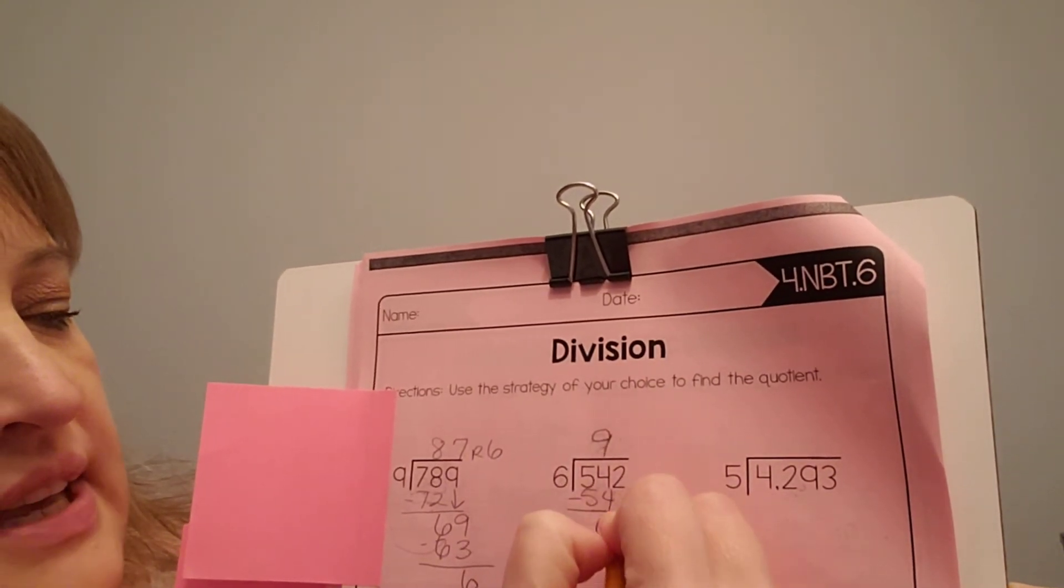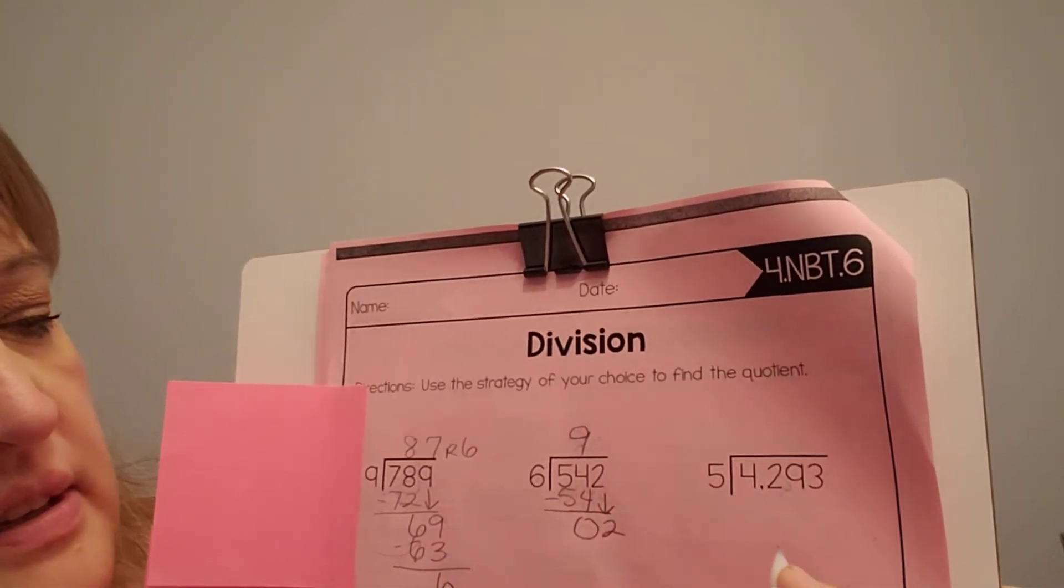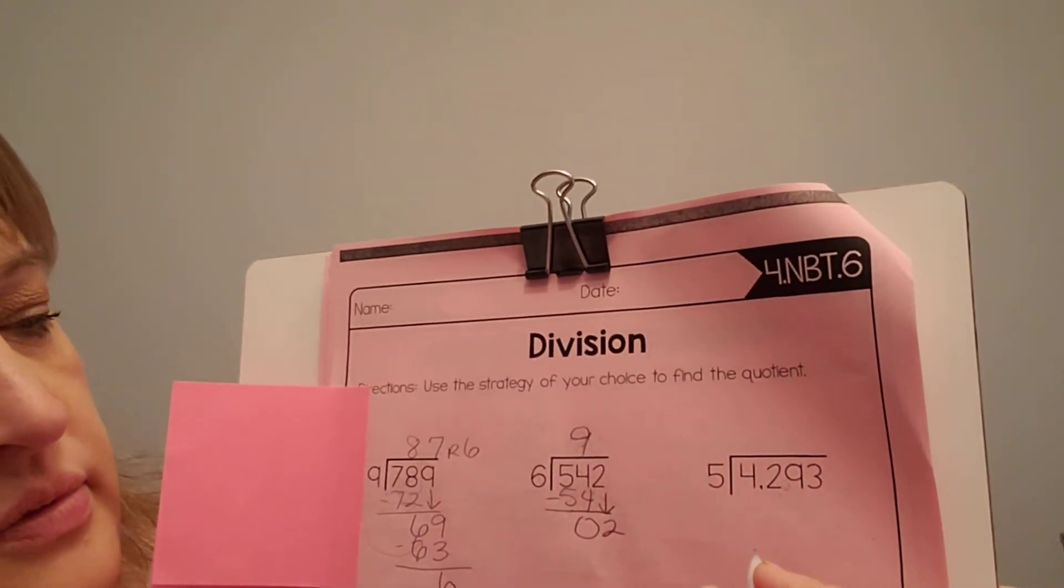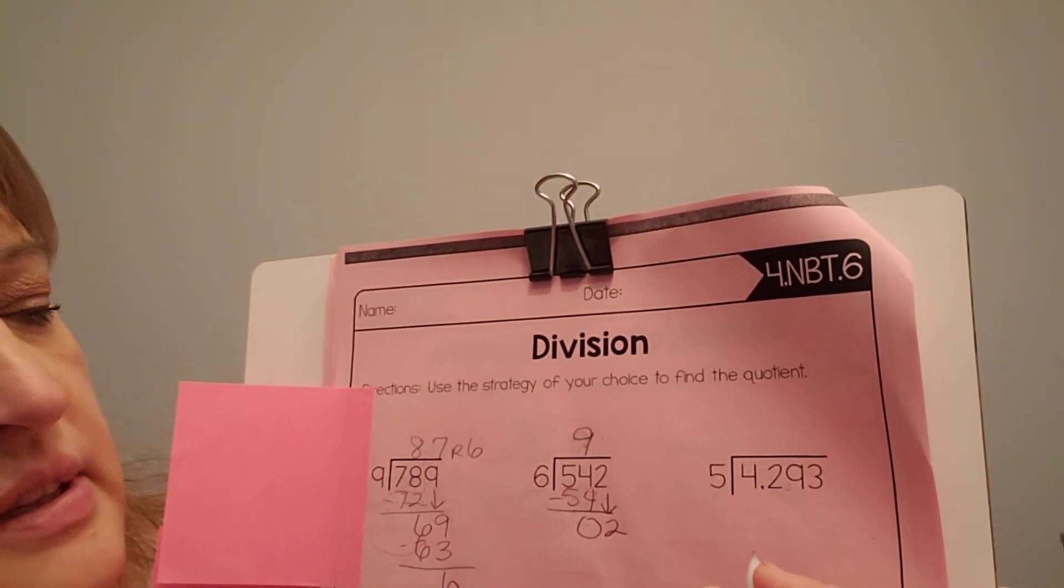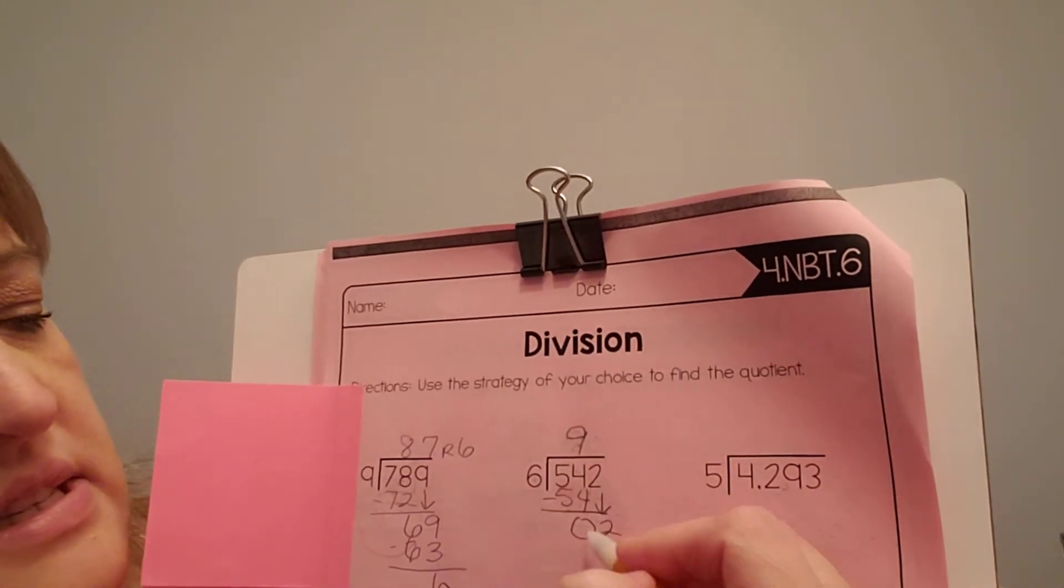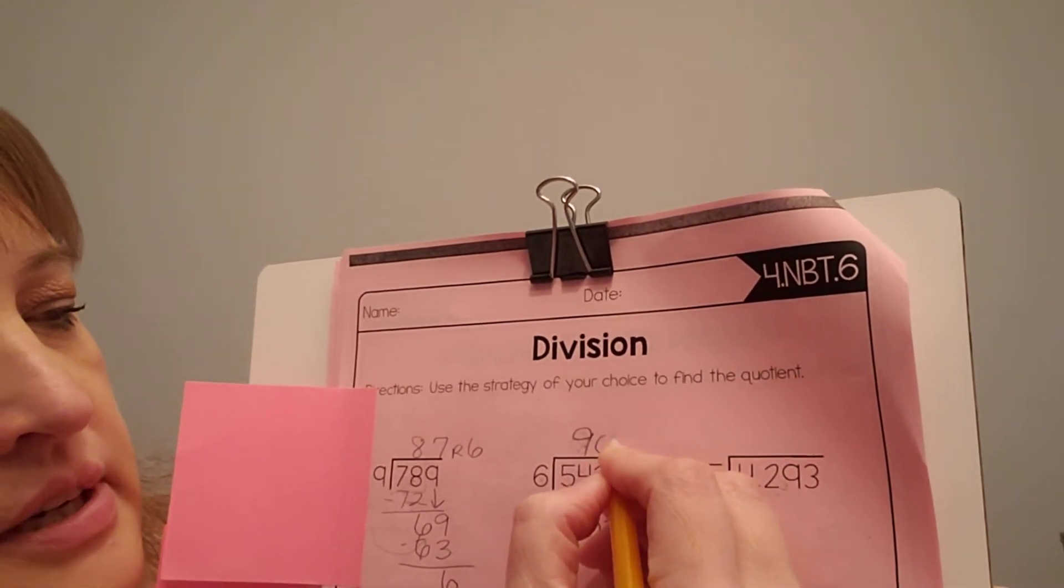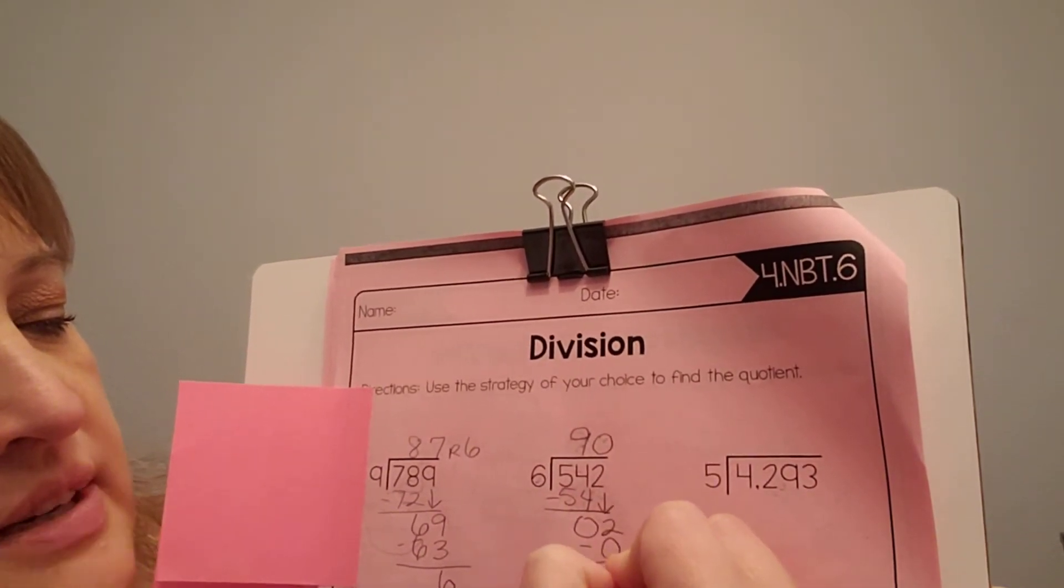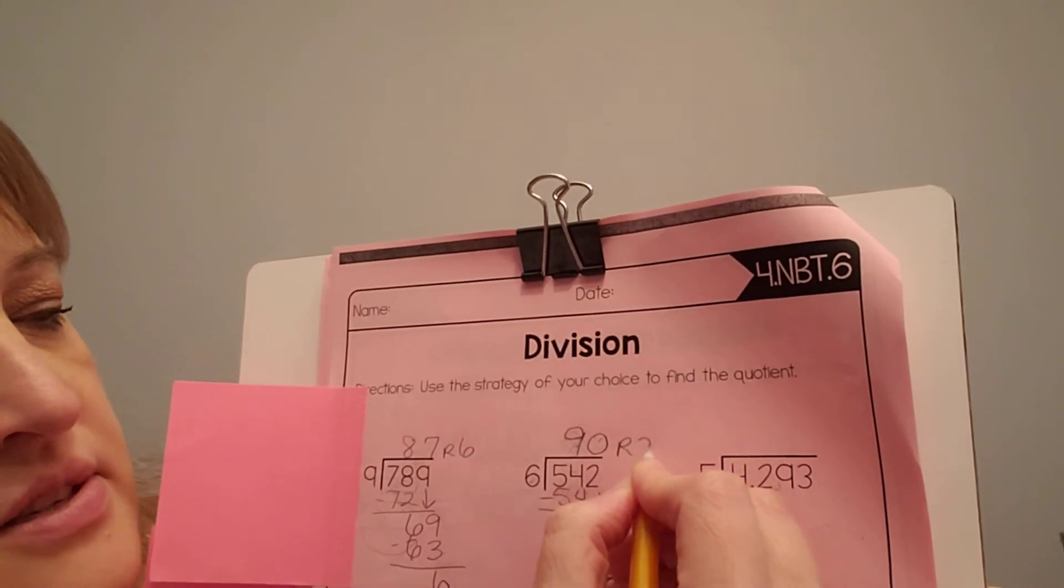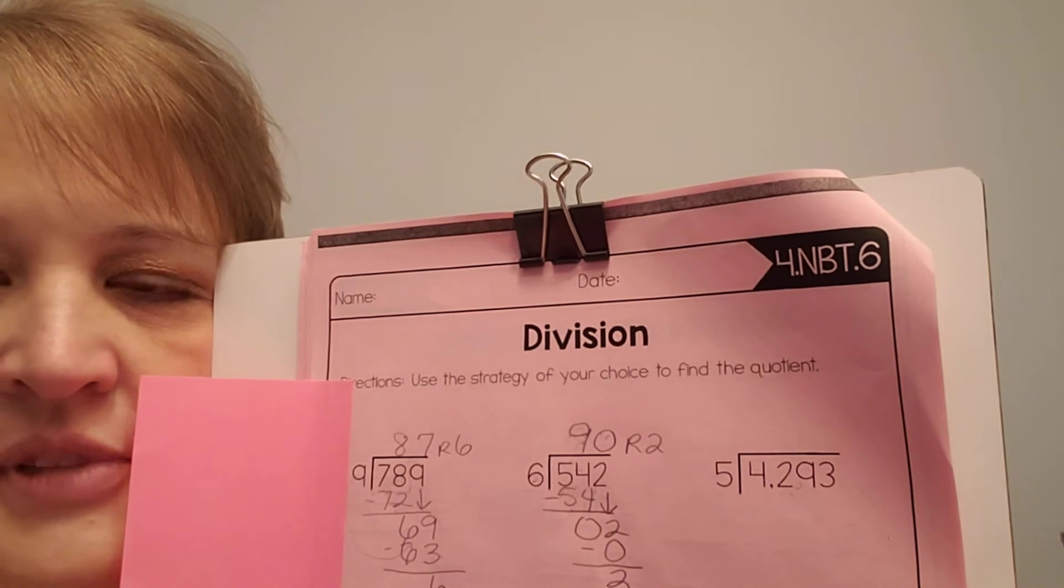And then if I subtract, I get 0. And then I'm going to bring down the 2. 6 times 9 is 54. Yes. Okay. Can 6 fit into 2? No. So I'm going to put a 0 here. 6 times 0 is 0. And I'm going to subtract and get 2. So my answer is 90, remainder 2.